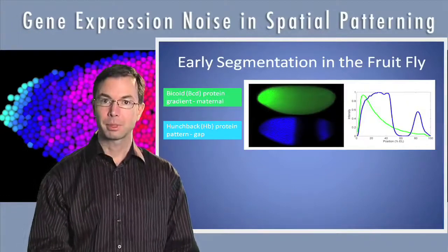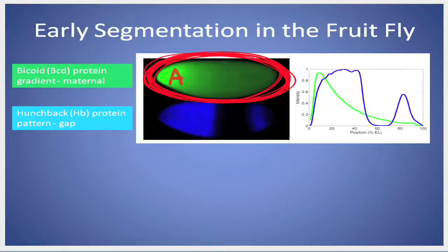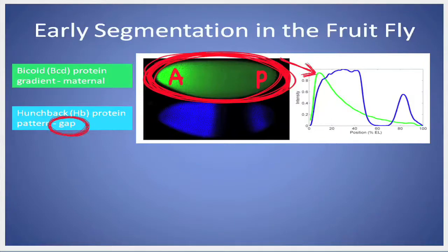One of the classic pairs that's studied is the bicoid protein, which is laid down in an exponential gradient down the anterior to posterior length of the fruit fly, from anterior to posterior. It's this green line over on the right. This gradient provides positional information for where cells further on in development differentiate into different types. One of the early transcriptional targets of bicoid, which is the transcriptional regulator, is the hunchback protein — a gap gene that's turned on in the embryo and forms this characteristic boundary at mid-embryo. This is shown over in blue here, the concentration of hunchback as you go from the anterior to posterior end of the embryo.